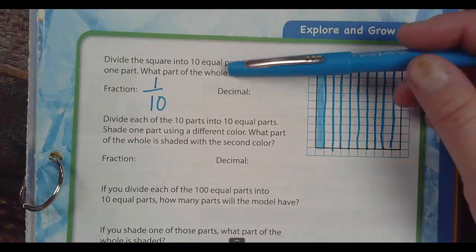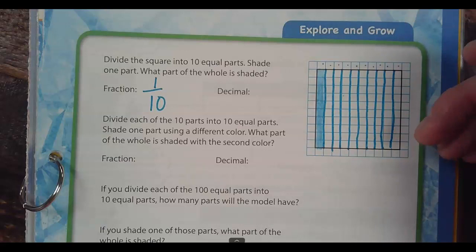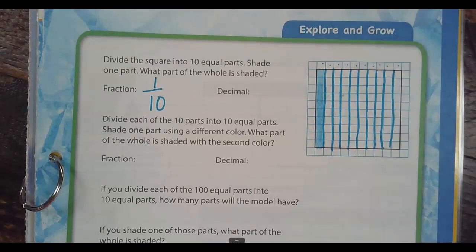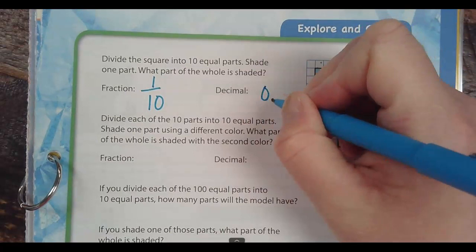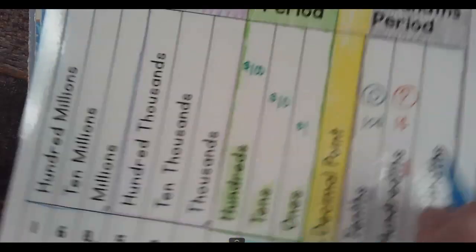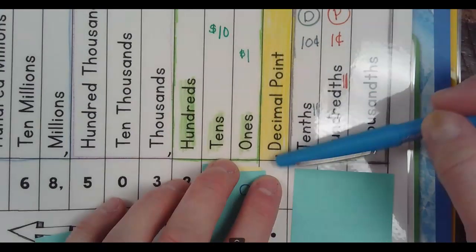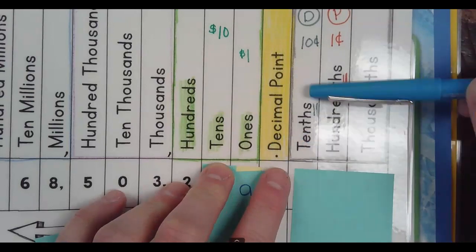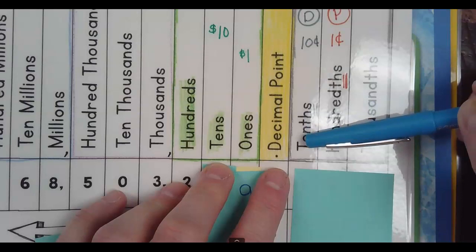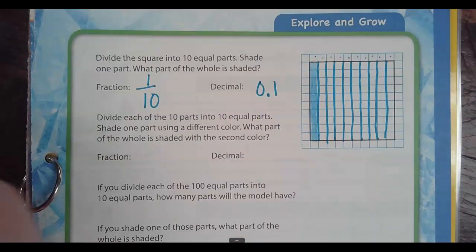Now, how do I write that fraction as a decimal? Yes, 0.1. So when I think of this, I go back to my little chart we used the other day. When I'm talking decimals, there's my decimal point. Decimal point one — this is tenths. There are ten dimes in a dollar, so 0.1 means ten cents. That's how I keep it square in my head.